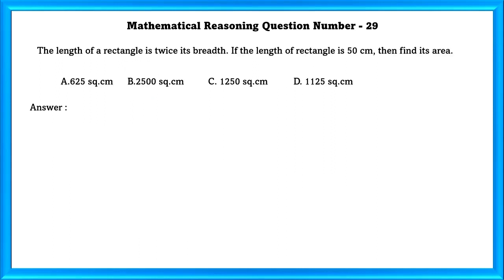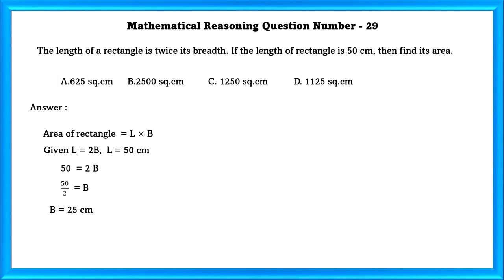Mathematical reasoning question number 29. The length of a rectangle is twice its breadth. If the length of the rectangle is 50 centimeters, find its area. Area of a rectangle is equal to L × B. Given L = 2B and L = 50 cm, so 50 = 2B, meaning B = 25 cm. Using this, the area is equal to 1250 square centimeters.